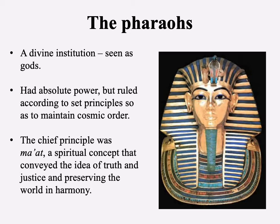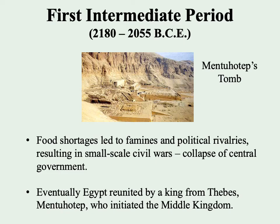The chief principle underlying all of this was something called ma'at — a spiritual concept that conveyed the idea of truth and justice. So long as the pharaohs adhered to this principle, being the living manifestation of it and governing according to it, it would preserve the world in harmony. That pretty much highlights the main points associated with the Old Kingdom, eventually coming to an end in 2180 BCE.